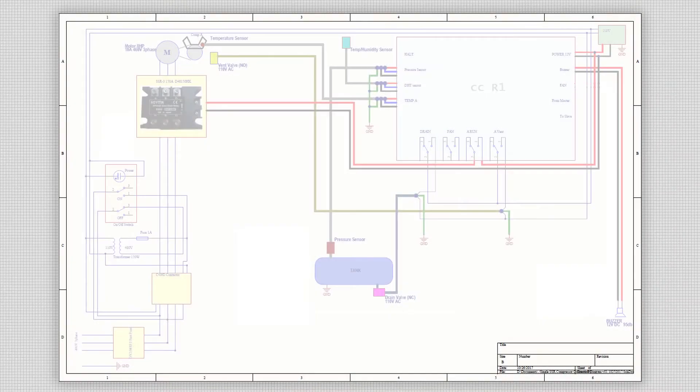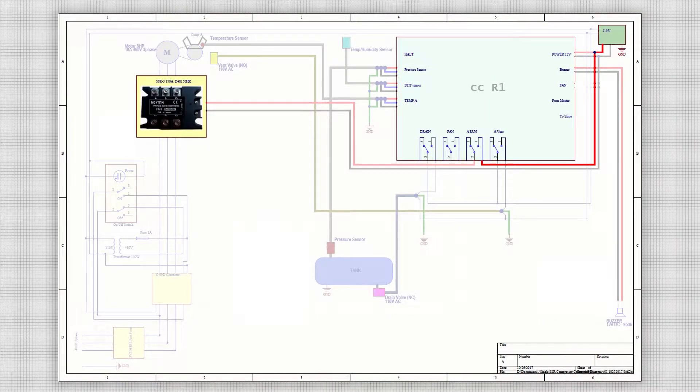Now getting back to the compressor installation, we will connect the positive wire from the power supply to the normally open connector on the compressor controller and wire the common to the solid state relay's positive terminal. The black ground wire will go directly to the negative terminal of the solid state relay.